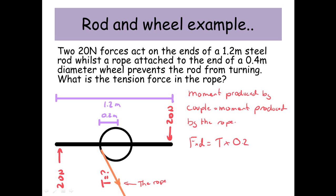So we can say the moment produced by the couple, F times D, equals the moment produced by the rope, which is T, the force we don't know, times 0.2.